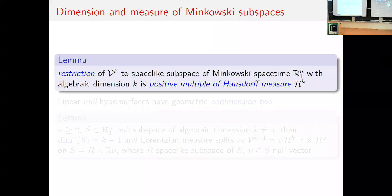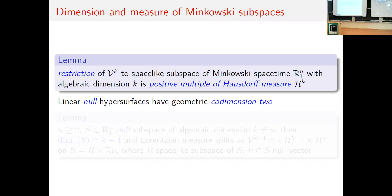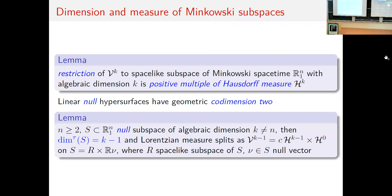To see sensitivity to causal structure, consider subspaces of Minkowski spacetime. A space-like subspace of algebraic dimension k has Lorentzian measure equal to a positive multiple of the Hausdorff measure on that subspace. However, a linear null hypersurface has geometric codimension two, not one. More generally, a null subspace of algebraic dimension k (with 2 ≤ k < n) has synthetic dimension k−1, and the (k−1)-dimensional Lorentzian measure splits as a multiple of Hausdorff measure times the counting measure on the null direction.